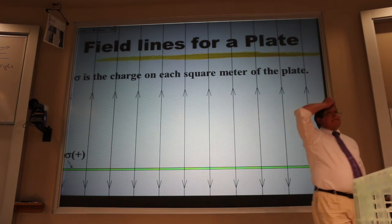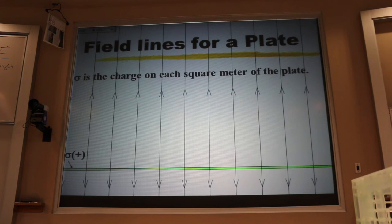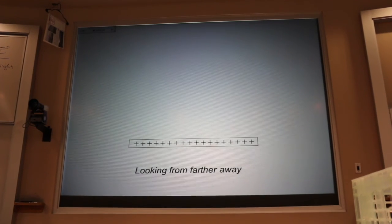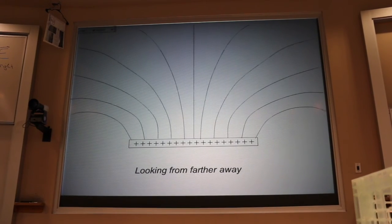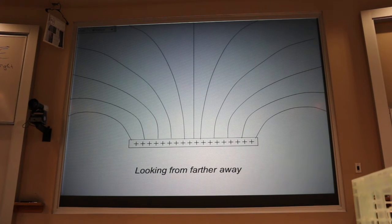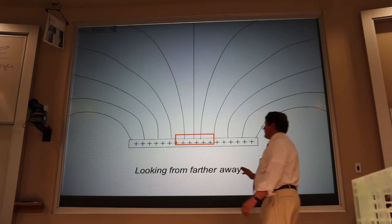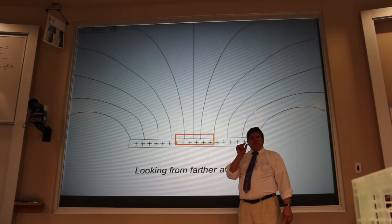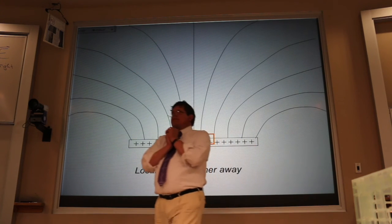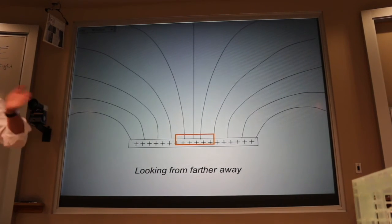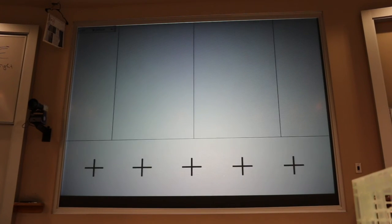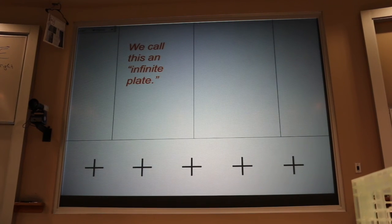Now folks, this field, this parallel field, is an approximation. In real life, we don't have sheets of charge that go on forever. And if we're away from that sheet of charge that's finite, the field lines curve like that. However, there's an entire branch of physics called surface science that happens very close to surfaces. And there are just a huge number of applications where we stay away from the edges and we stay close to the surface. And in those cases, we have what's called the infinite sheet or infinite plate approximation.